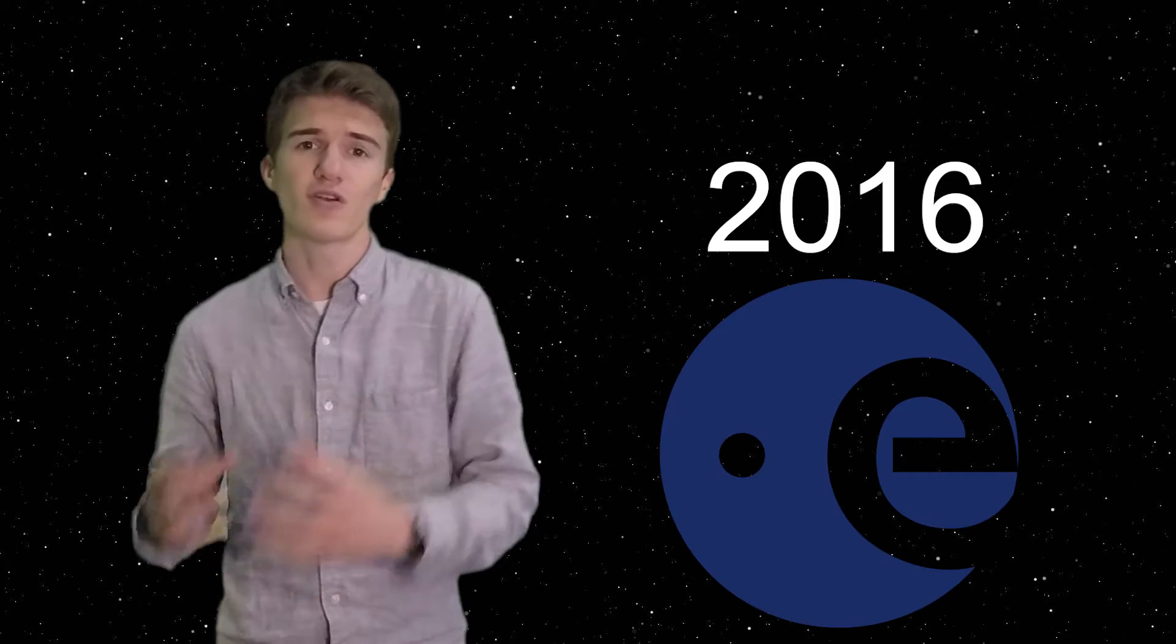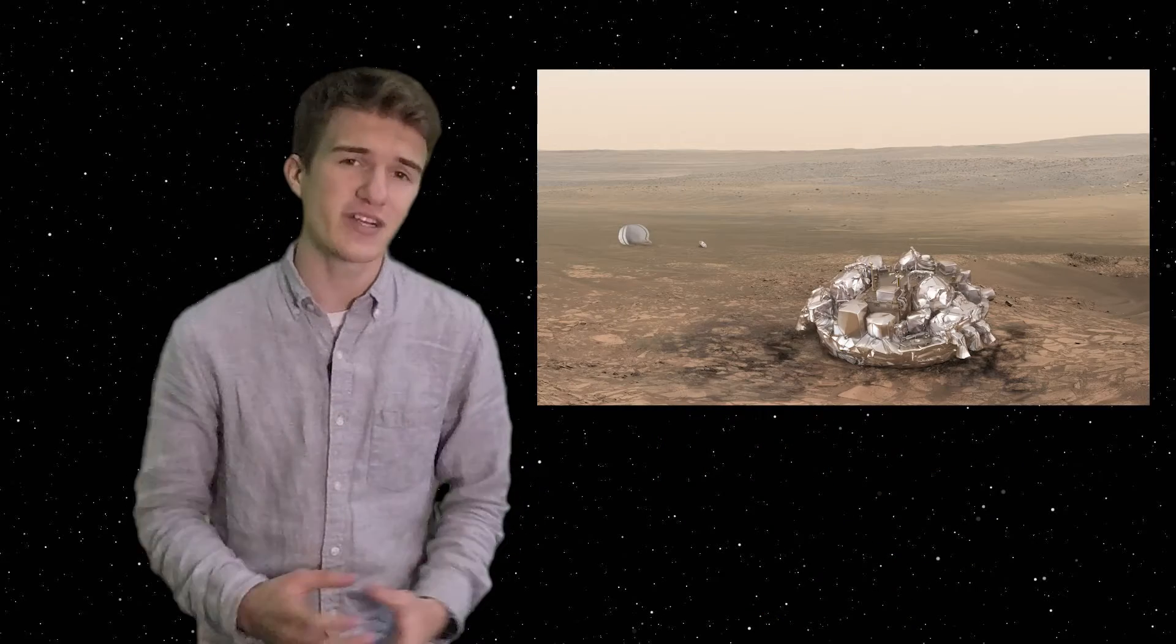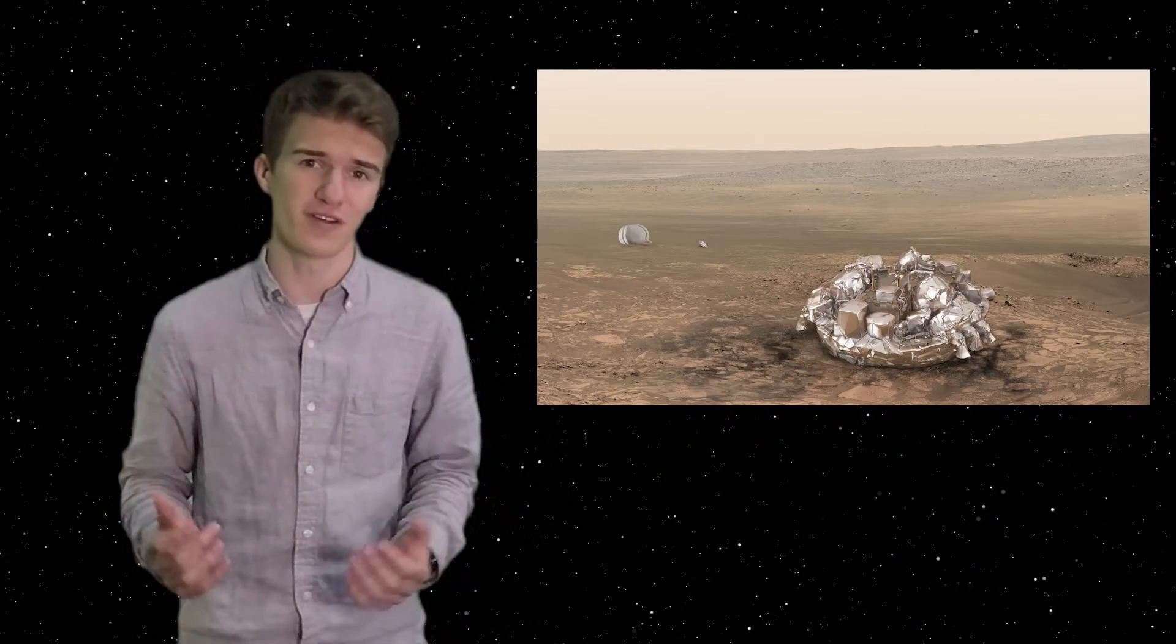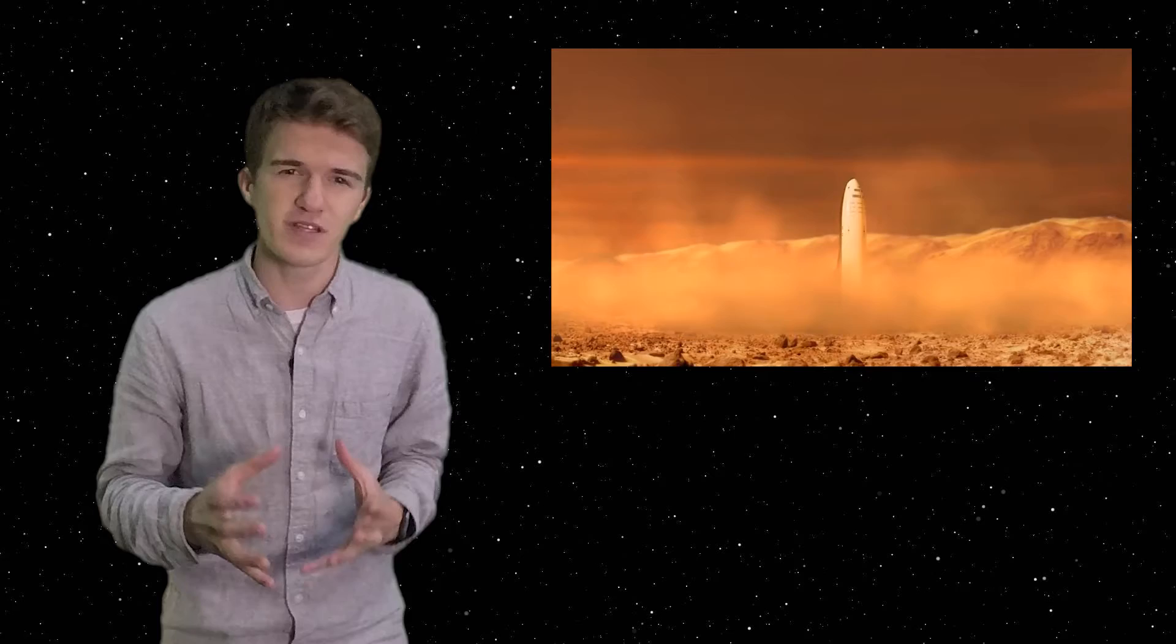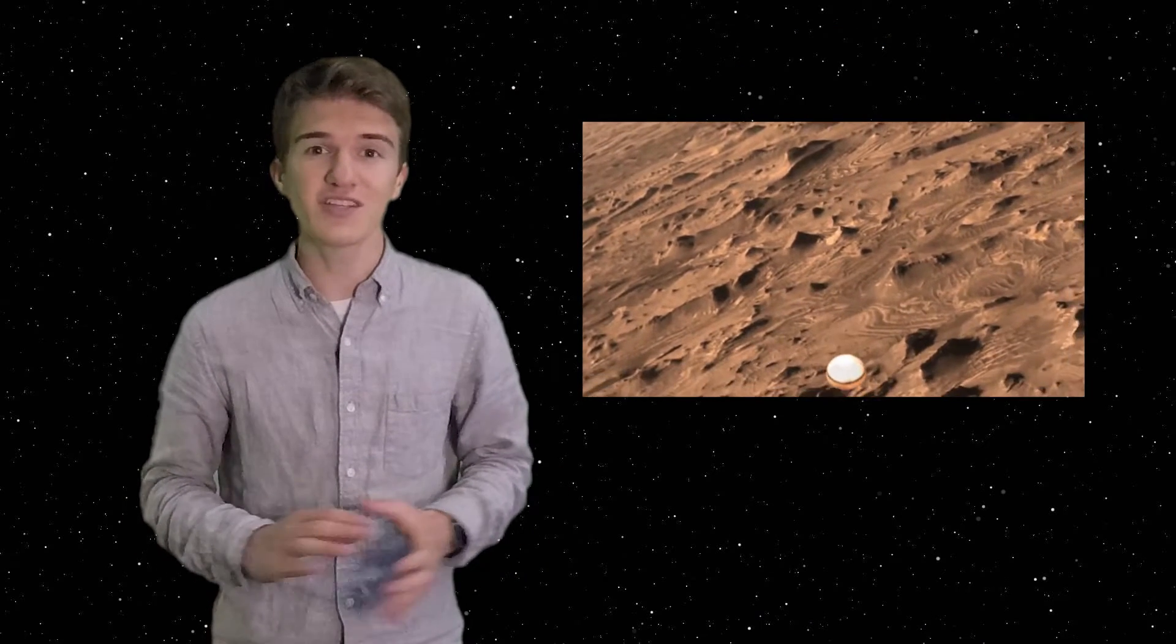Landing something on the surface of Mars just isn't that easy. As recent as 2016, the European Space Agency's lander crashed into the surface due to a sensor malfunction. If we want to be able to safely put people on the surface of the red planet, then we have to understand what some of those challenges are. So what has NASA and the Russian Space Agency done in the past to safely land people, and what have we done with robots? Let's talk about that.